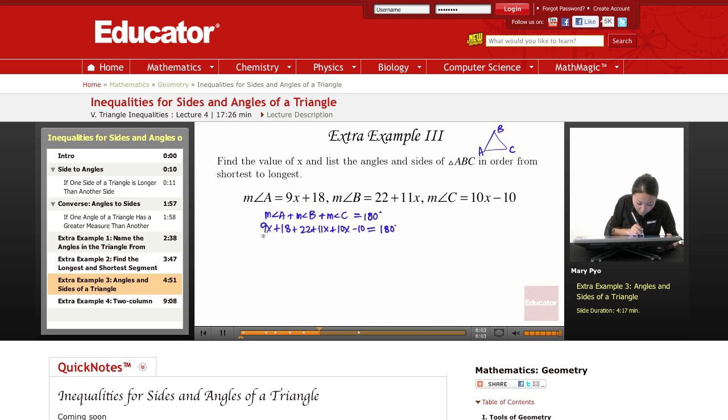So let's see. I'm going to add up my like terms, all the x's. So 9x plus 11x is 20 plus 10 is 30x. And then 18, 22, and minus 10. So 18 plus 22 is 40, minus 10 is 30. So plus 30 equals 180.